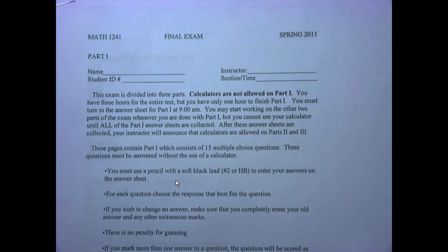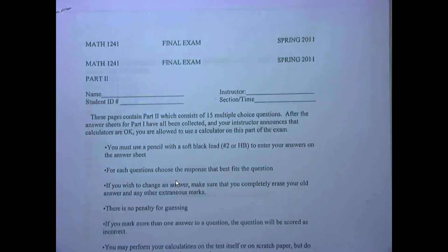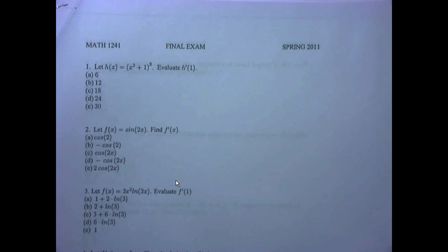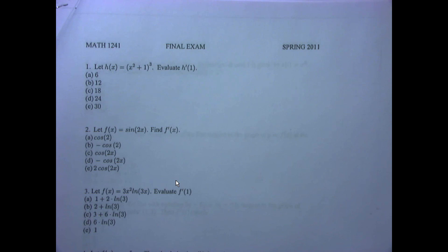Here we go. This is the spring 2011 semester exam, part one, no calculator. Don't forget your number two pencil. The first problem: let h of x equal x squared plus one, quantity cubed. Evaluate h prime of one. If they're giving you no calculator, the major idea behind calculus one is derivatives — take derivative, take derivative, take derivative. This one wants me to take the derivative and then plug in one, and they're going to give you nice numbers to work with.